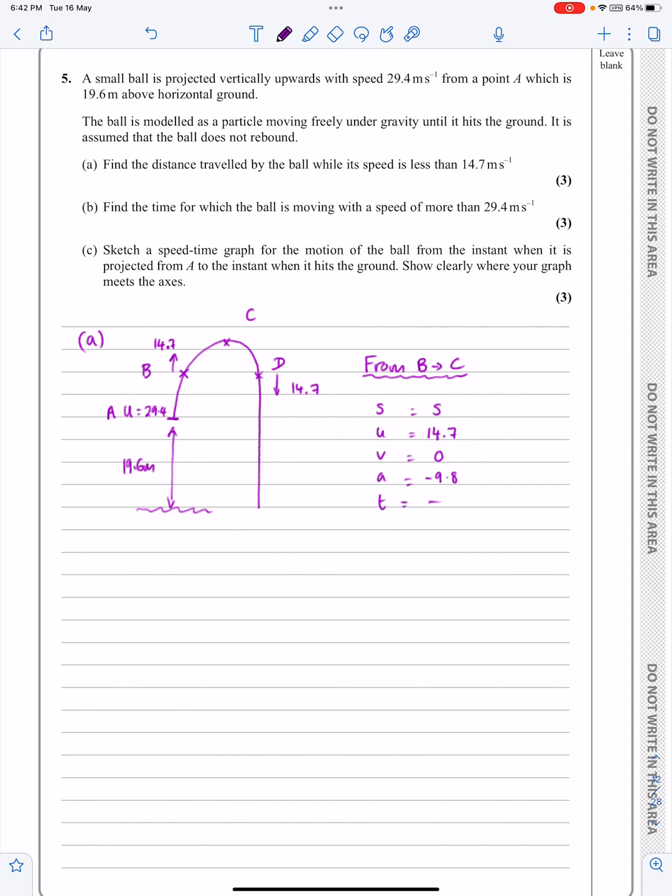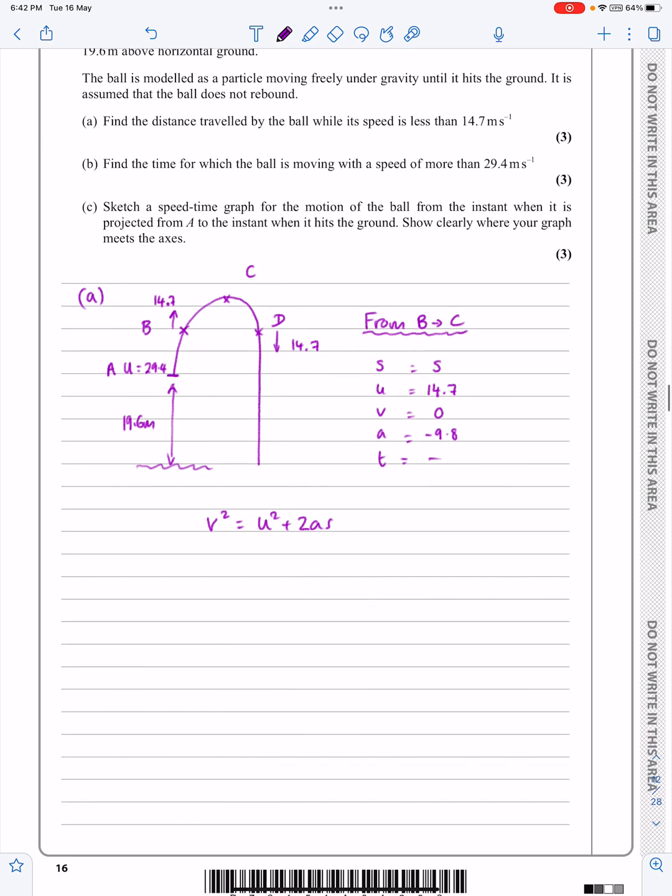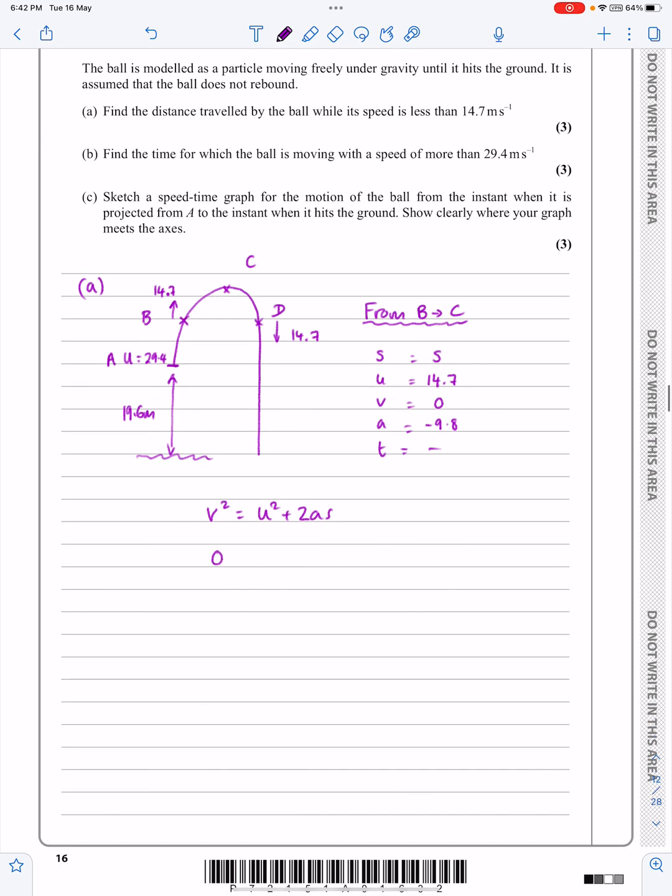If I now decide to do V squared equals U squared plus 2AS, that's how I connect V, U's, A's and S's, and it should work. Okay, so 0 squared is going to be 14.7 squared. I always do this quickly, and you should really get used to this as well. If we do this work, 2A is minus 19.6 times S. You can do it slower, but, you know, we're trying to help ourselves out as much as possible here.